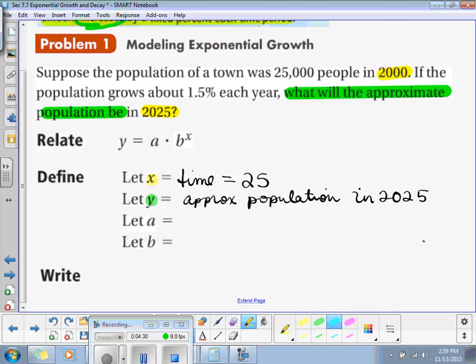A was our initial amount, right? So, initially, what was the population? 25,000. Very good. So, there's our A.